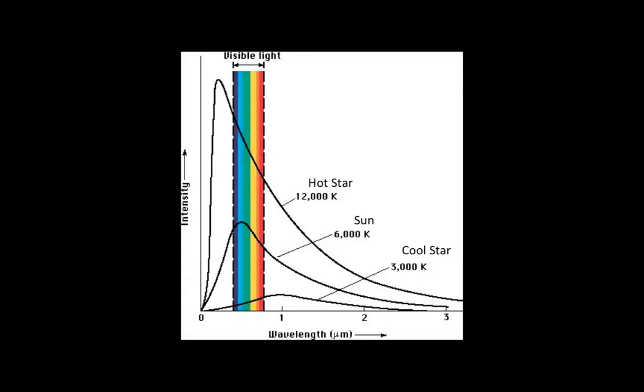Some stars, those with temperatures close to the sun, emit most of their light in the visible. Stars smaller and cooler than the sun emit most of their light at longer wavelengths, in the infrared. Stars bigger and hotter than the sun emit most of their light at shorter wavelengths, in the UV and X-ray.